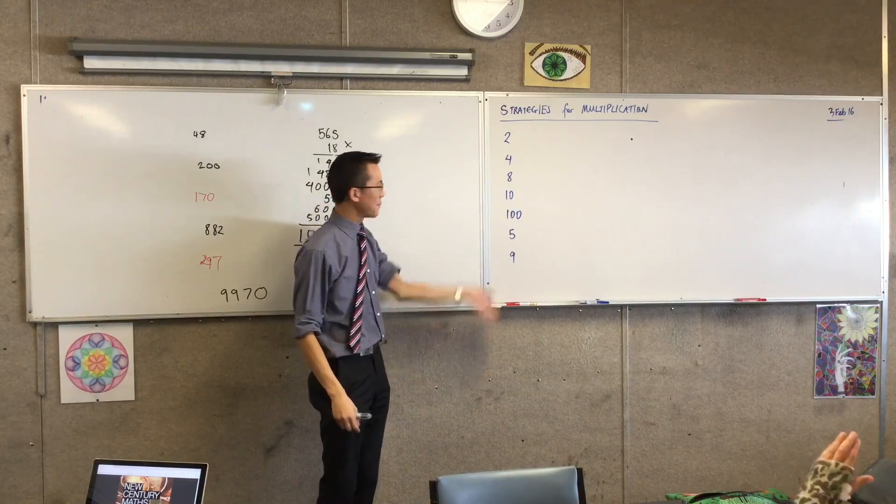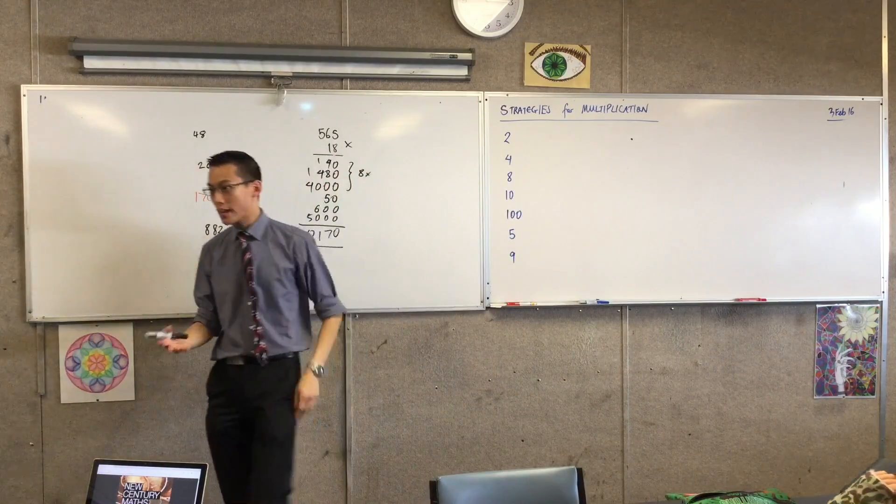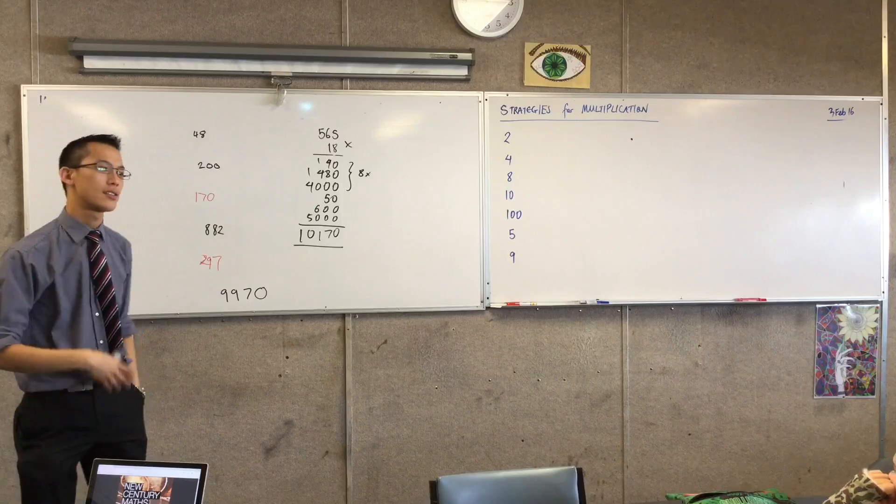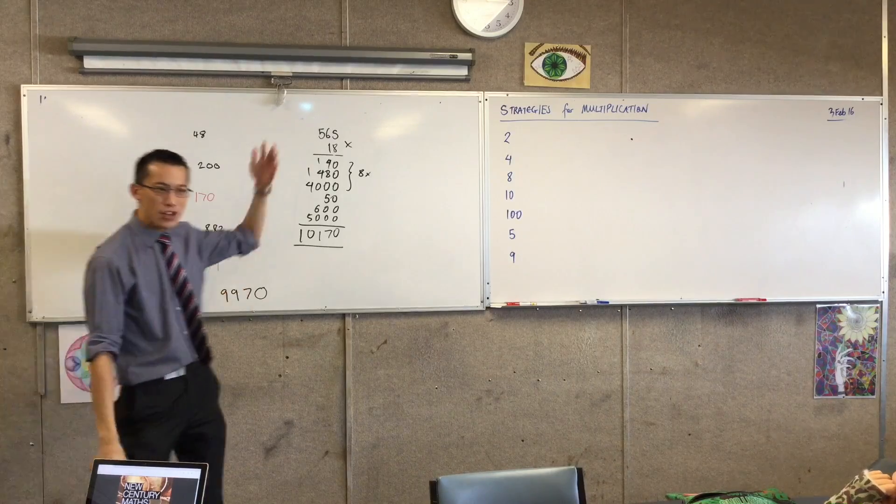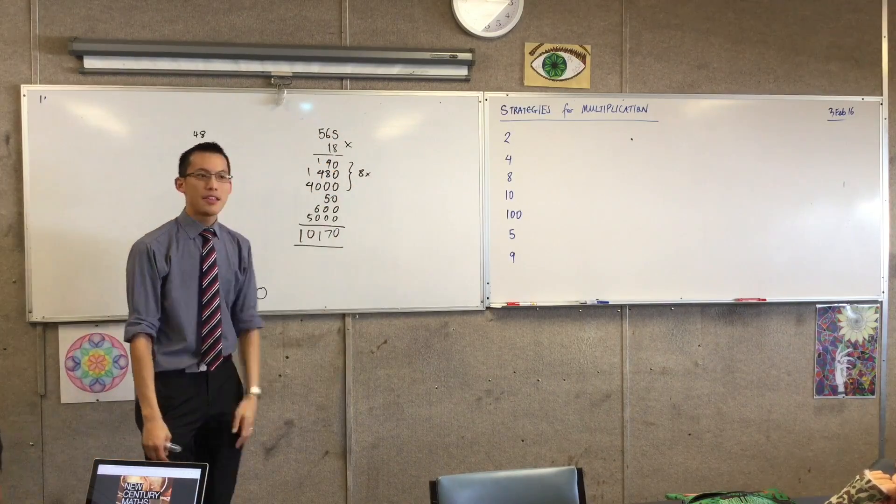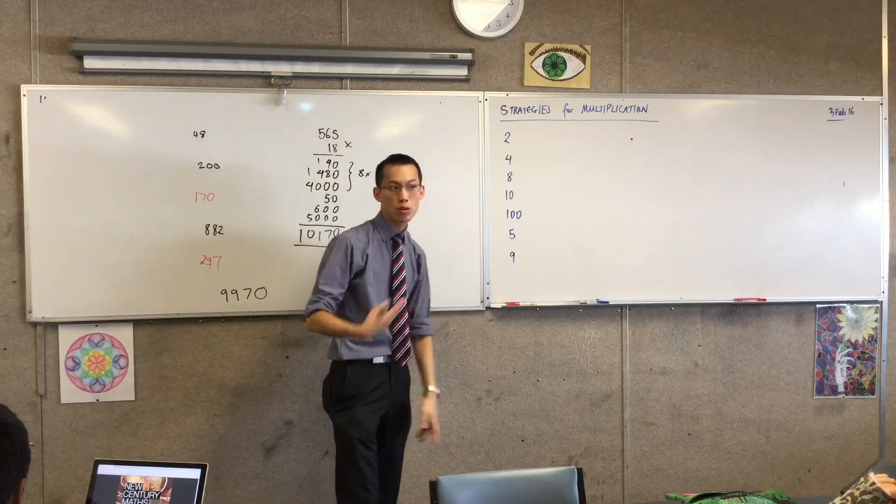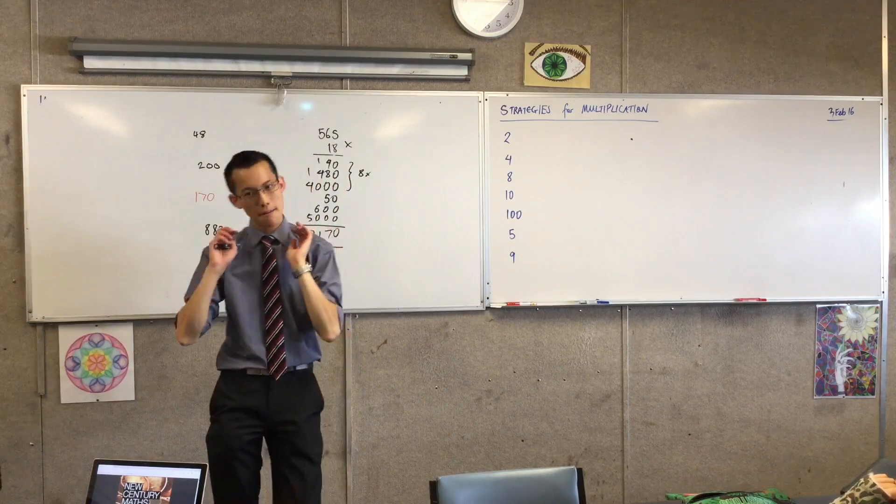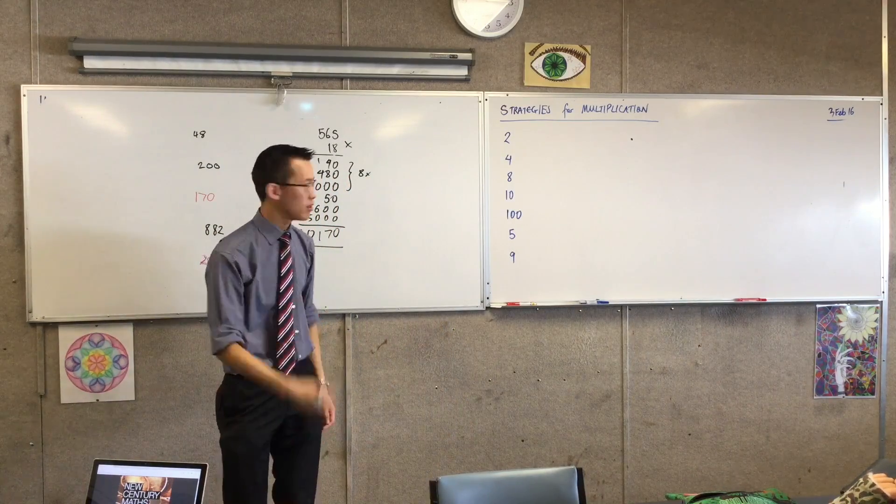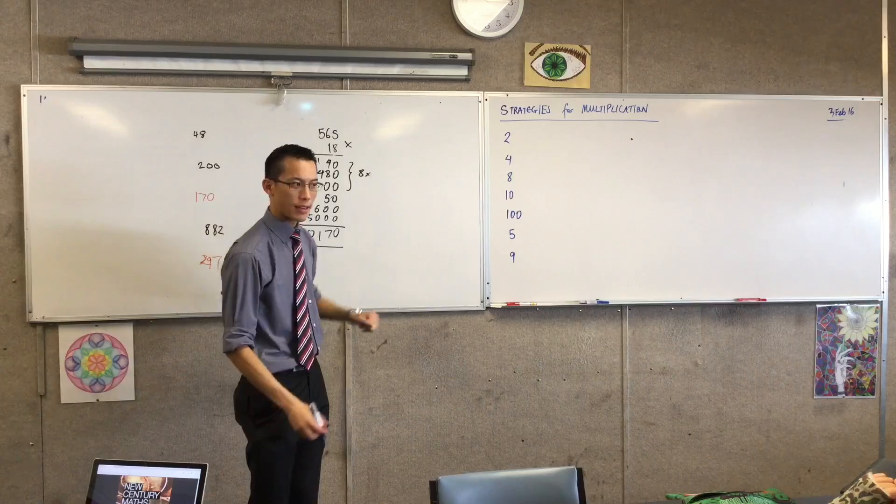Whenever you are multiplying by any of these numbers, and there are a few extra ones as well, but this is a really good set to start with. Whenever you're multiplying by these numbers here, there are some strategies or shortcuts you can use that make things much simpler. So let me show you some of them. 2, 4 and 8 to start with.